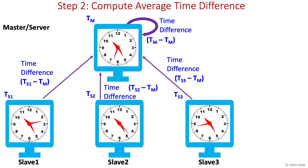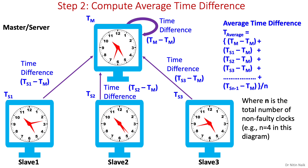In the second step, the master computes the average of all time differences including itself. The general formula is to add all time differences and divide by the total number of non-faulty clocks, assuming that the master's clock is also non-faulty. Note that it ignores time from the faulty clock based on a fault-tolerant averaging function.